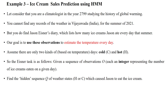Hi, welcome to ice cream sales prediction using Hidden Markov Model. Here we will consider a climatologist in the year 2007-1999. He is studying the history of global warming. You cannot find any records of climate in Vijayawada, one of the locations in India, for the summer of 2021. But you do find Jason's diary which lists how many ice creams Jason ate every day in that summer. Our goal is to use these observations to calculate the temperature of every day.